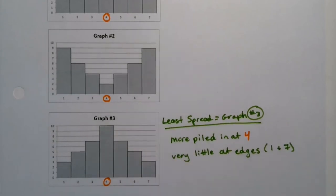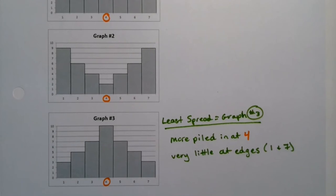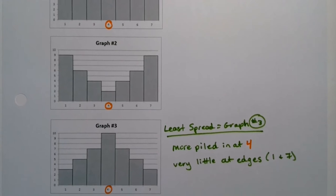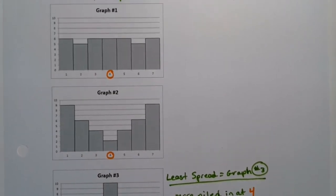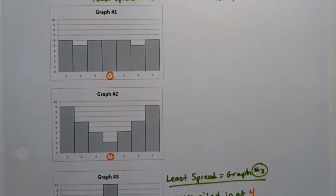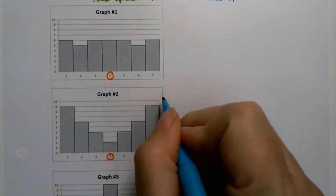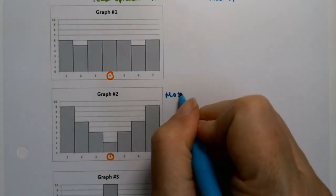All right, by that same token, which graph has the most spread? Okay, well, looking, it's got to be one of these two that's left. The most spread out is actually number two. This one is the most spread.